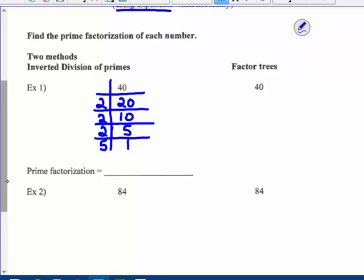So 40 can be written as 2 times 2 times 2 times 5, or better, as I said, let's use exponents when necessary. 2 cubed times 5. 2 cubed is 8. 8 times 5 is 40. So that's correct.